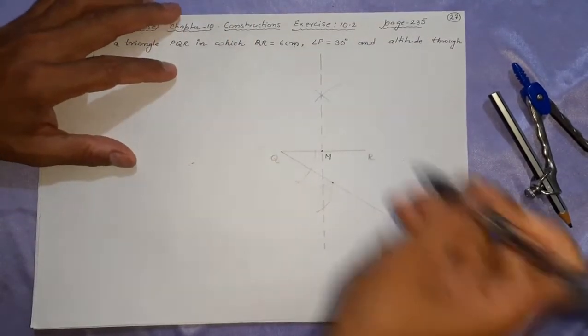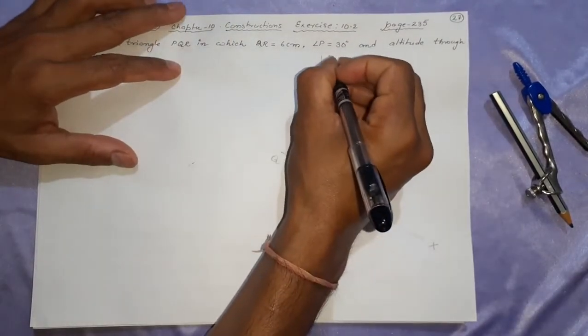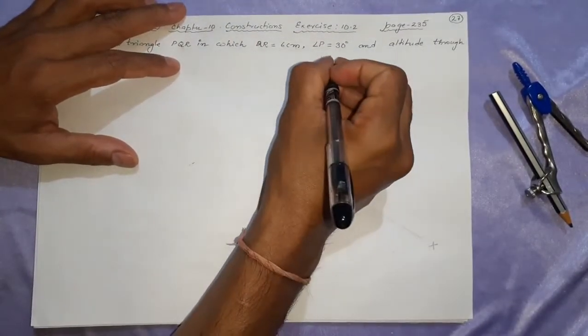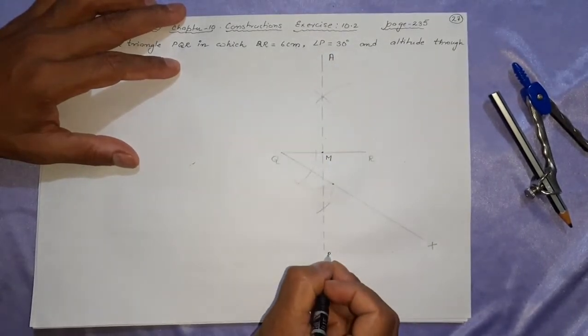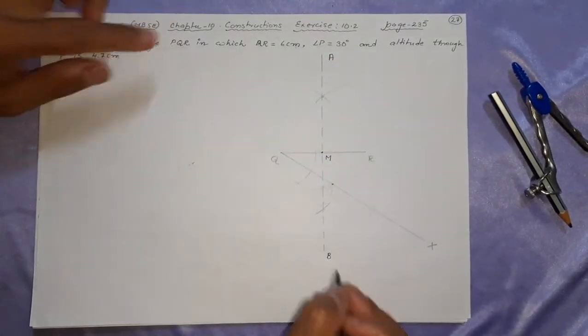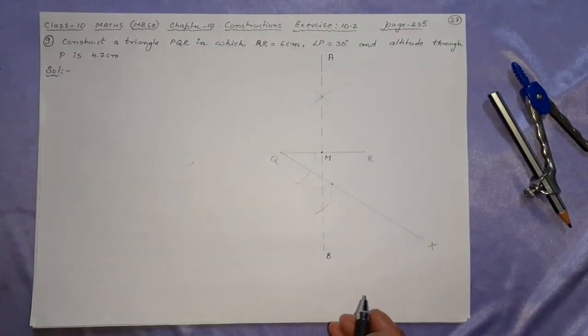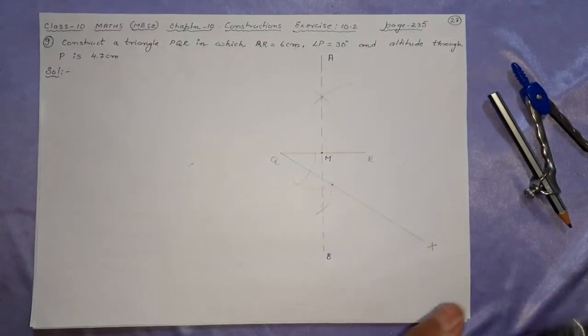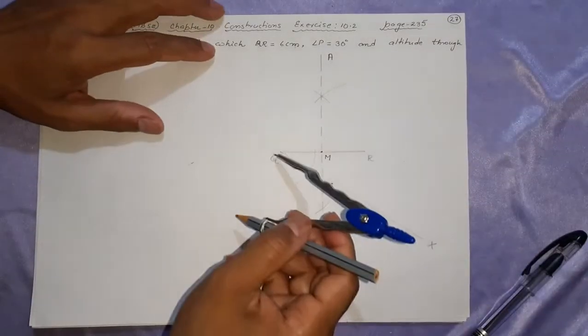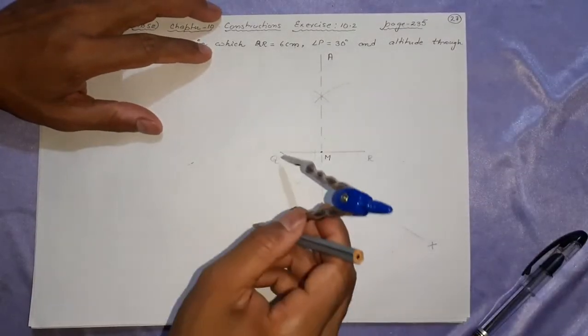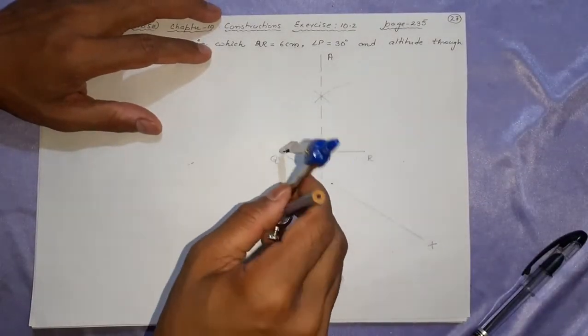If you remember, this line was named PQ in the previous question. This time I will name this AB, because PQ is going to be the name of the triangle. Now, after this, we are going to make 90 degrees here on this QX.